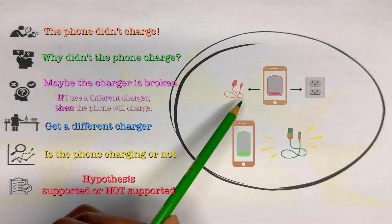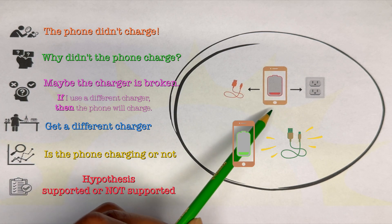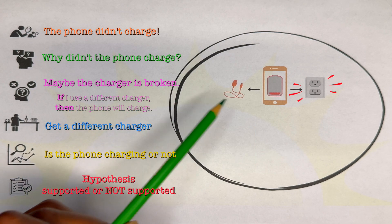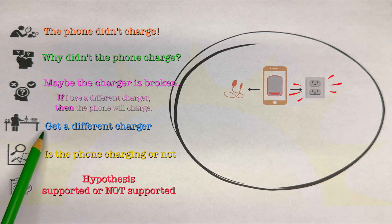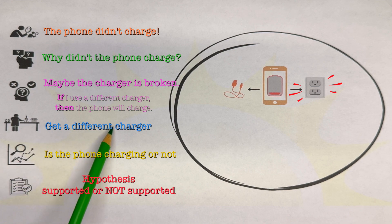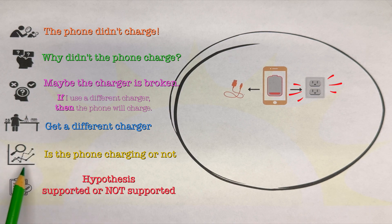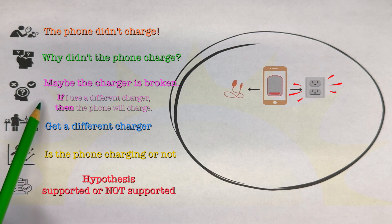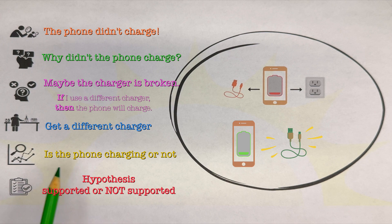If after changing the charger the phone is still not charging, go back to your hypothesis and change it. Instead of maybe the charger is broken, maybe the outlet is broken. So: if I use a different outlet, then my phone will charge. Look at your results and draw your conclusion — was your hypothesis supported or not? In this example, after looking at the test results, the phone is charging, so the conclusion is that the hypothesis is supported.